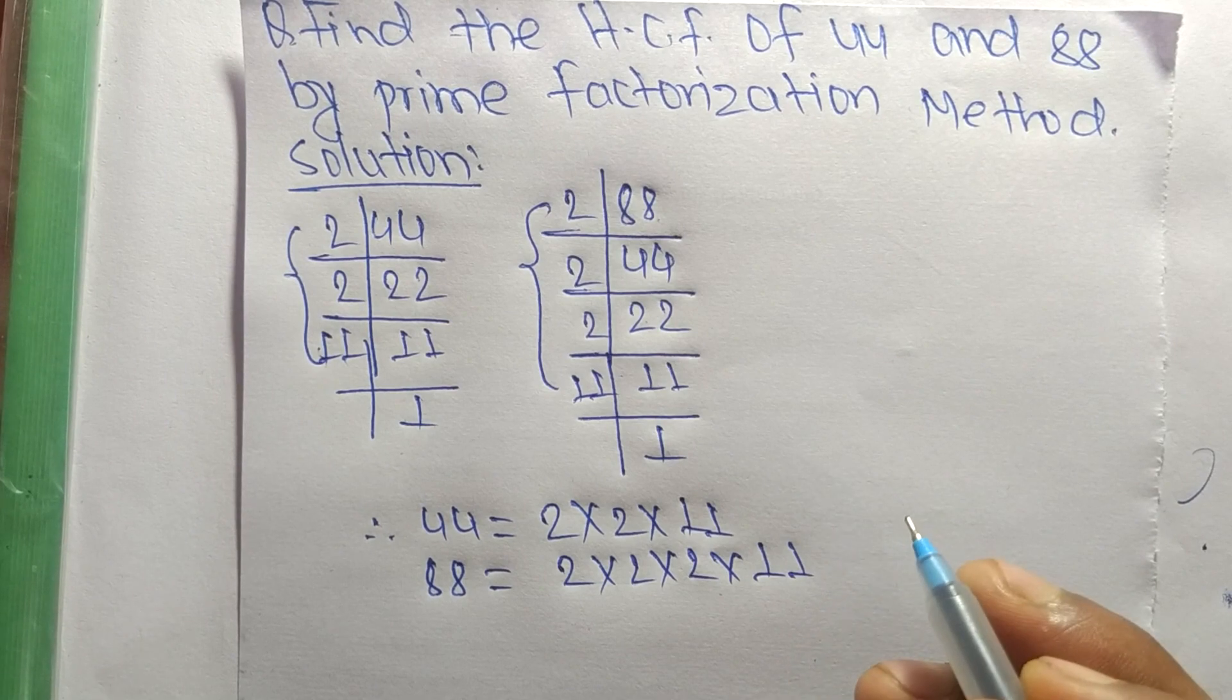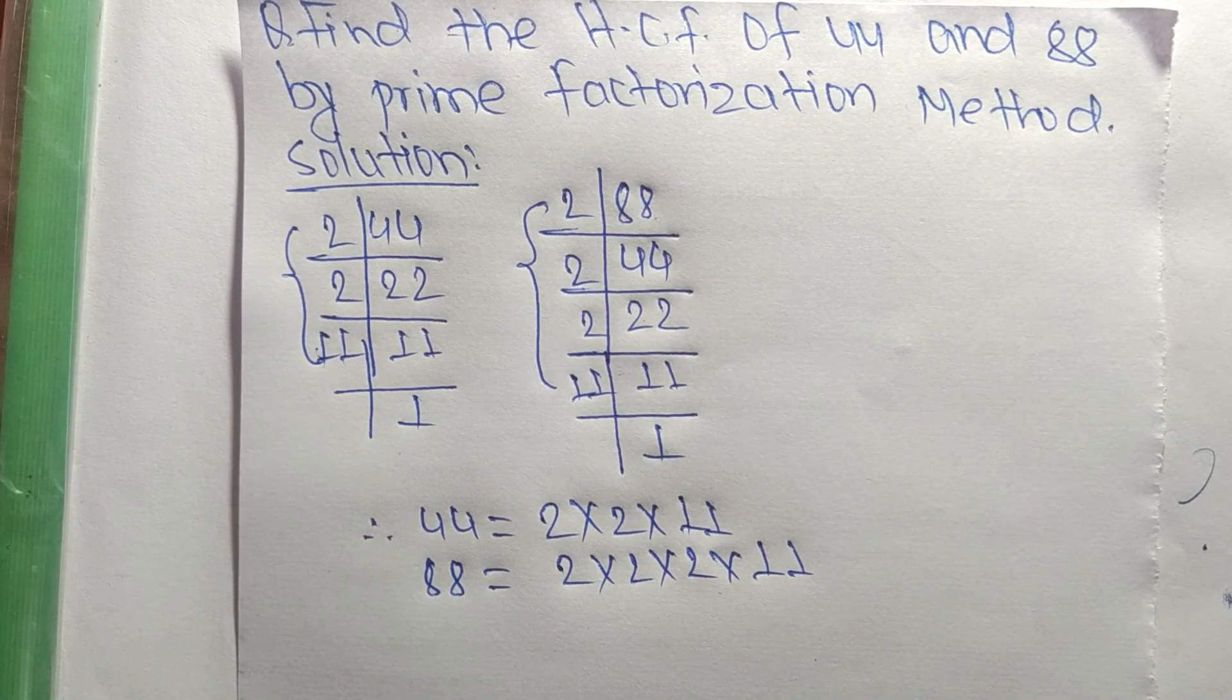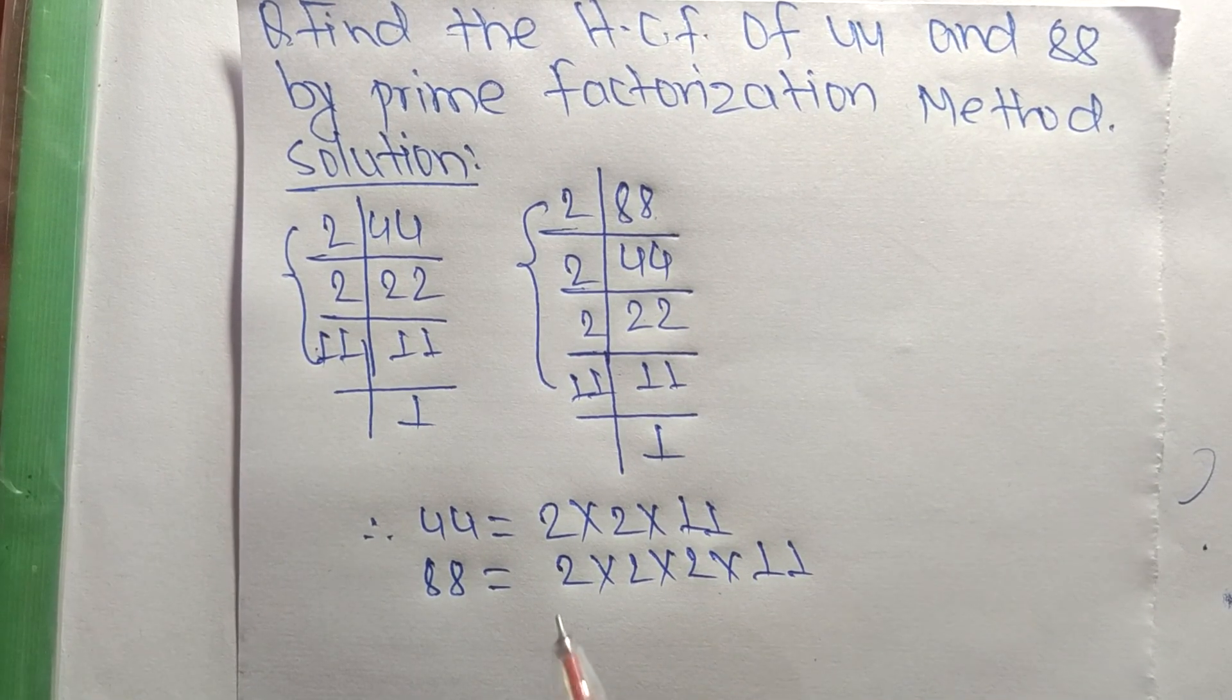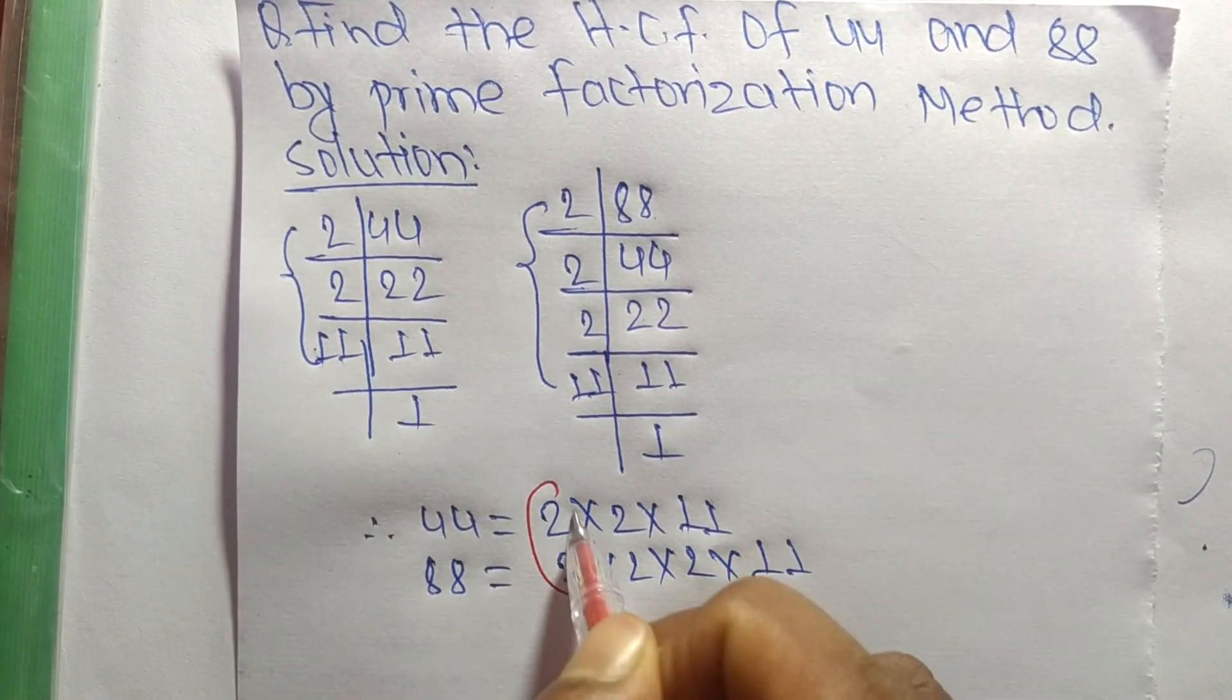Now we find out the common factors in these prime factorizations. The common factors here are 2, 2, and 11.